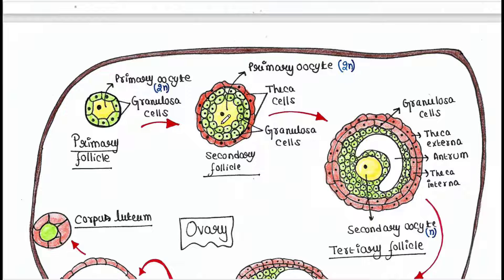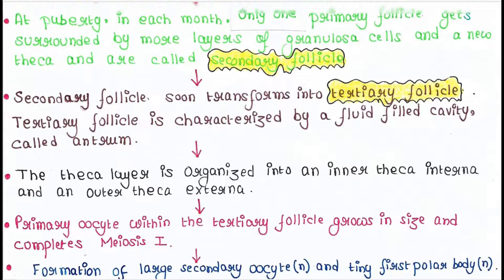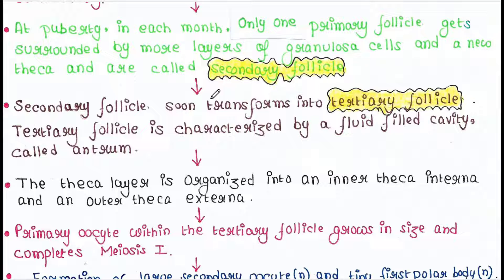The primary oocyte is a diploid cell surrounded by layers of granulosa cells as well as theca cells. This whole unit is called the secondary follicle. The secondary follicle soon transforms into the tertiary follicle.